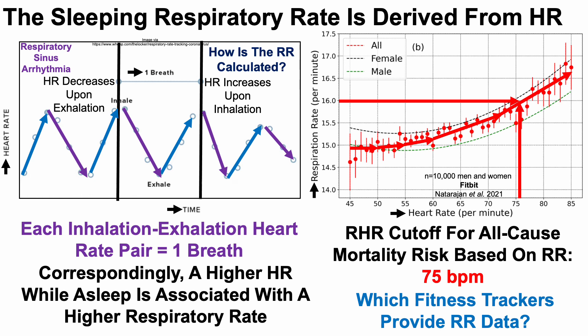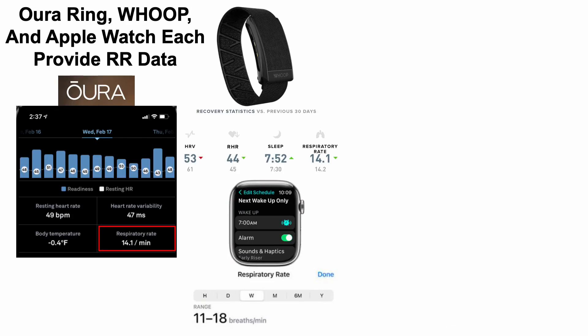Which fitness trackers provide respiratory rate data? We already know Fitbit, but there are others. Oura Ring, Whoop, and Apple Watch each provide respiratory rate data. This is just a small snapshot — there may be other fitness trackers that provide that data — but Oura, Whoop, and Apple Watch are confirmed to provide it.